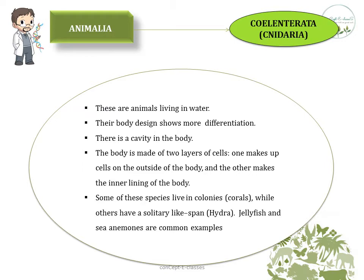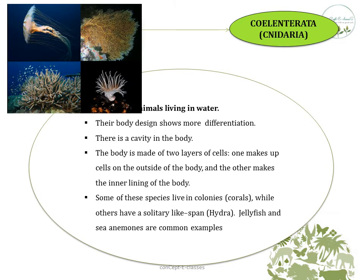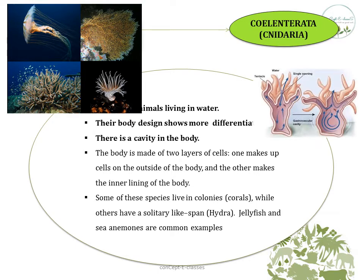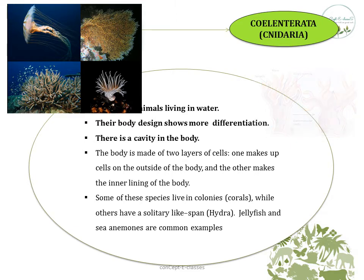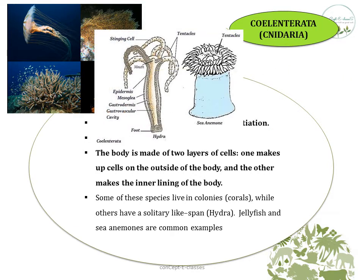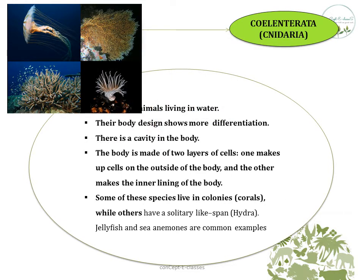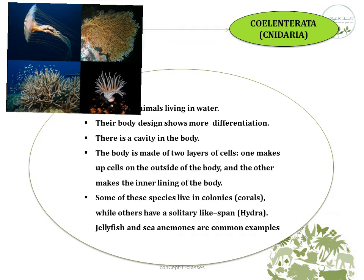The next division is Coelenterata. These are animals living in water and show much more body differentiation compared to Porifera. There is a cavity in the body, and the body is made up of two layers of cells — one forming the outside and the other lining the inside. Some species live in colonies like corals, while others have a solitary lifespan like Hydra. Jellyfish and sea anemones are common examples of coelenterates.